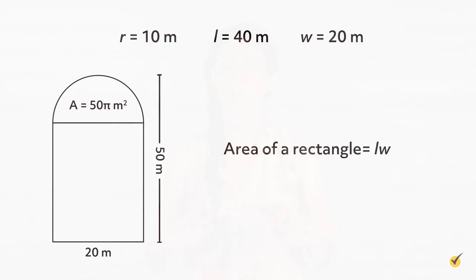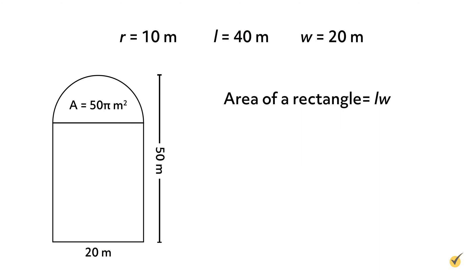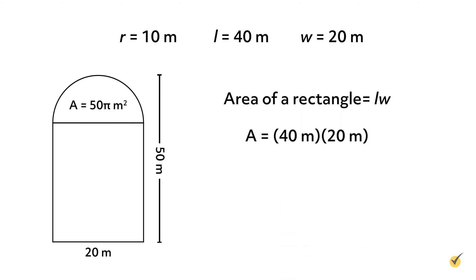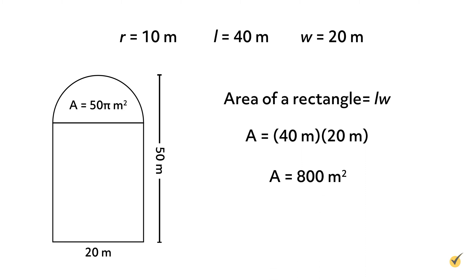That's the exact area. We could use 3.14 as an approximation of pi and multiply by 50 to get an approximate area that could be a bit more useful for a real-world problem. But first, let's find the area of our rectangle. The area of our rectangle is equal to length times width. Our length is 40 meters and our width is 20 meters, so 40 times 20 gives us 800 square meters.